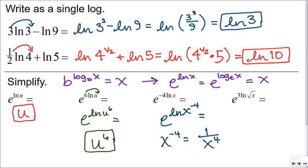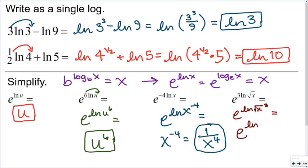And that is my final answer. For the last problem, I've got a couple of things going on. This becomes e to the natural log of the square root of x cubed, which can also be written as e to the natural log of x to the 3 halves. So my answer is x to the 3 halves.